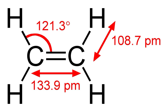Ethylene is oxidized to produce ethylene oxide, a key raw material in the production of surfactants and detergents by ethoxylation. Ethylene oxide is also hydrolyzed to produce ethylene glycol, widely used as an automotive antifreeze, as well as higher molecular weight glycols, glycol ethers, and polyethylene terephthalate.